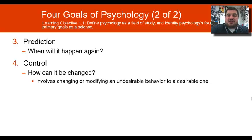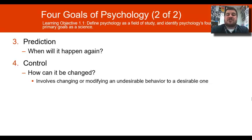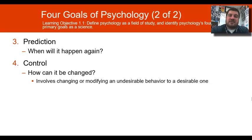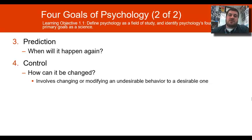The last goal is to try to control the behavior — how can we change it for the better? We change the undesirable behavior into a desirable one. Not all psychologists will use all of these goals at once, but these are the four goals of psychology.